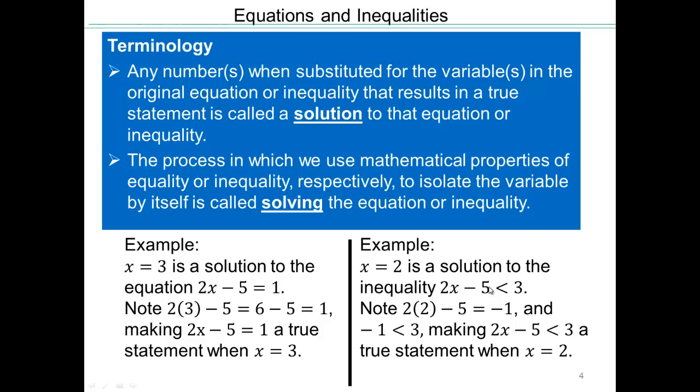What about x equals 6? 2 times 6 is 12. 12 minus 5 is 7. 7 is not less than 3. So that would not be a solution to this inequality. So x equals 6 is not a solution to the inequality. But 2 was, 0 was, and there are many others.